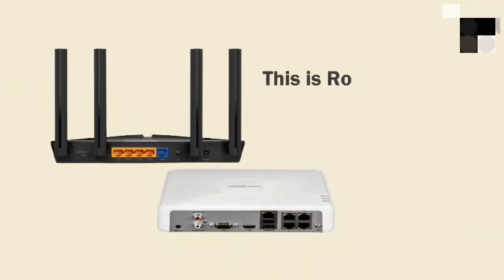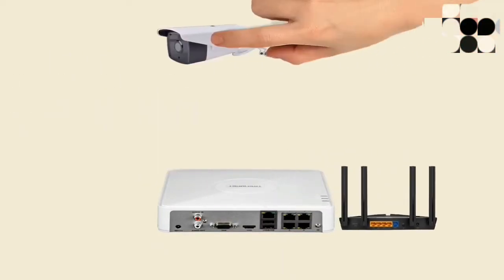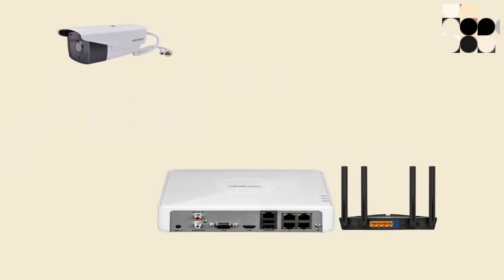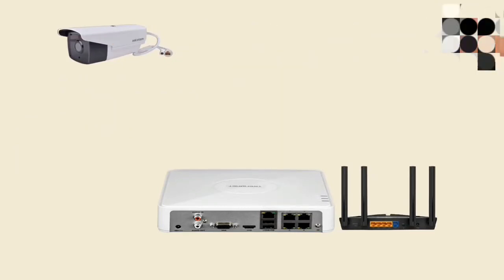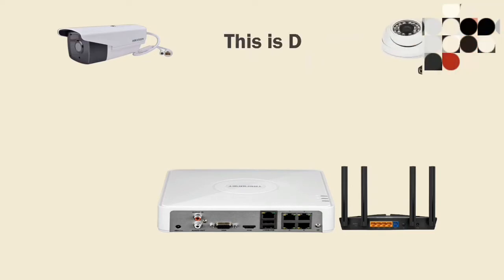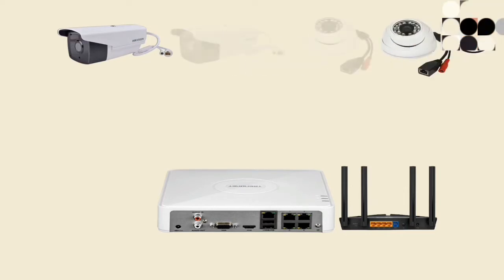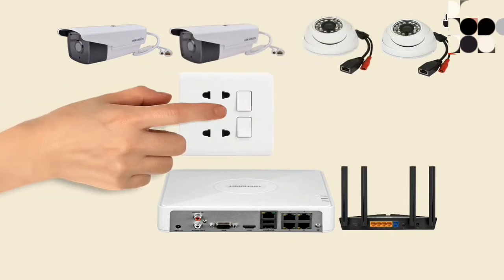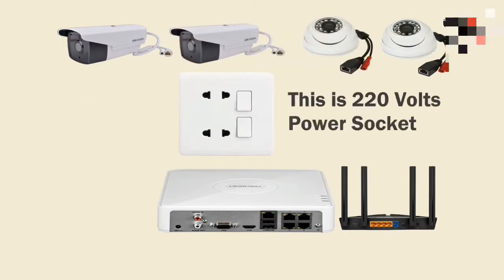So we're going to be setting out a few items that we're going to be using in the course of this installation. That's the router of course, then the bullet IP cameras. Subsequently you're going to see the different types of cameras, or you could actually Google it and see the different kinds of cameras. This is actually a dummy camera, and of course we're going to need power for it on major AC supply.